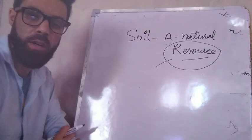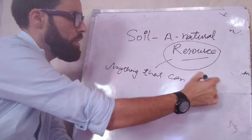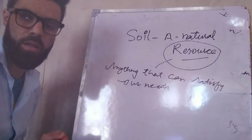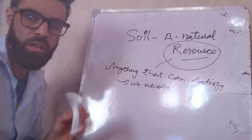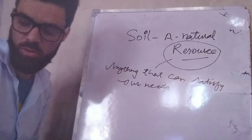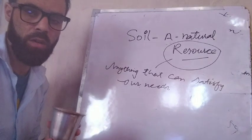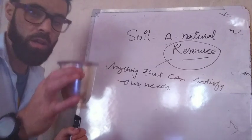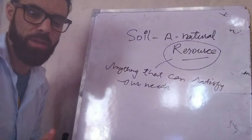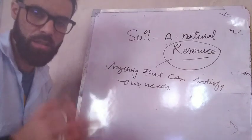Let us make it clear — what is a resource? A resource is anything that can satisfy our needs. For example, this marker is satisfying our need, that's why we pay for it, so it becomes a resource. This watch gives us time, so it is a resource. A glass used to carry water or a drink is a resource. This book we are reading from — the book becomes a resource. Anything usable becomes a resource.